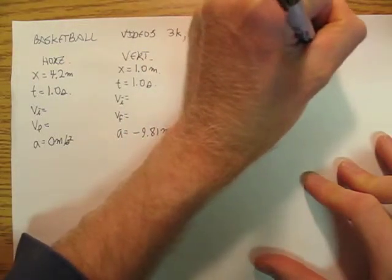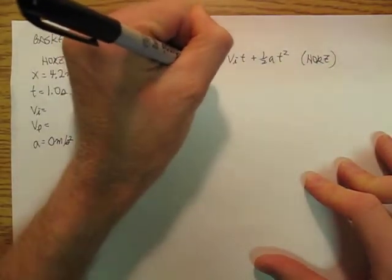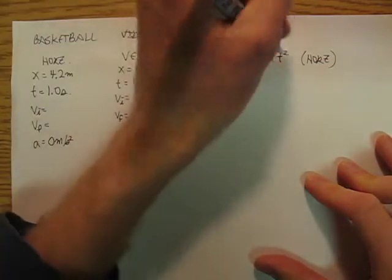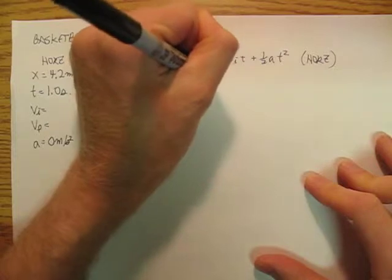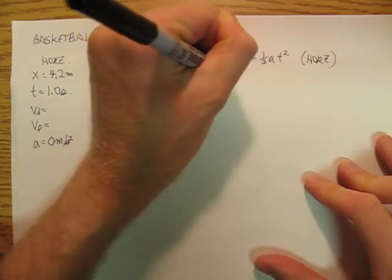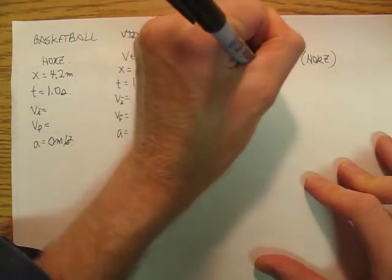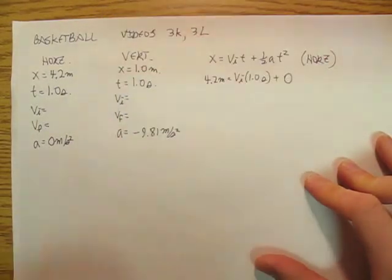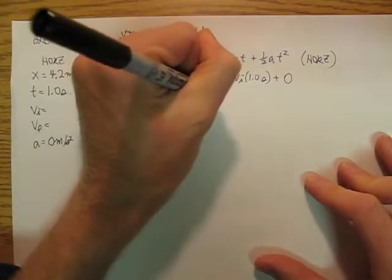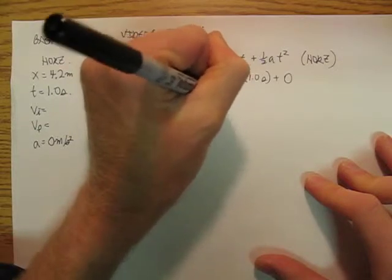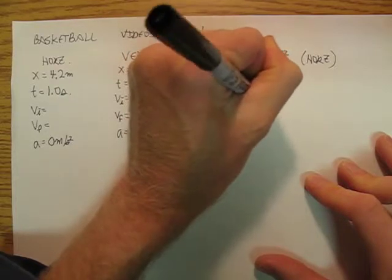And that's going to be my horizontal. And so we say, again, that's going to be 0, so we have 4.2 meters equals v_i 1.0 seconds plus 0 because of that.